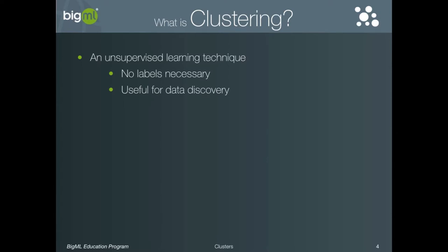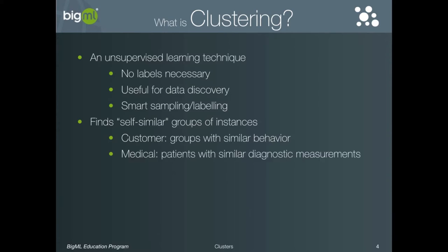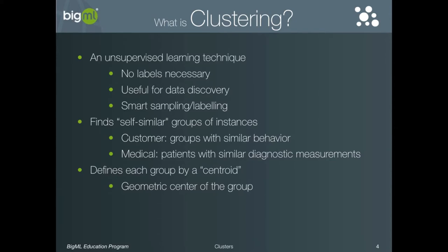In fact, in some cases clustering can even be used to reduce the cost of labeling a dataset by sampling from the cluster groups that are found and then applying the label to the entire group. It does this by finding self-similar groups of instances or rows in your data. For example, if you were analyzing data from an e-commerce site, you could find groups of customers with similar behavior or preferences, or in a medical context, clustering could find groups of patients with similar diagnostic measurements. Once completed, the output of clustering is a set of points called centroids. The centroid is the geometric center of the group of instances in that feature space, and as such it represents the average member of the group.